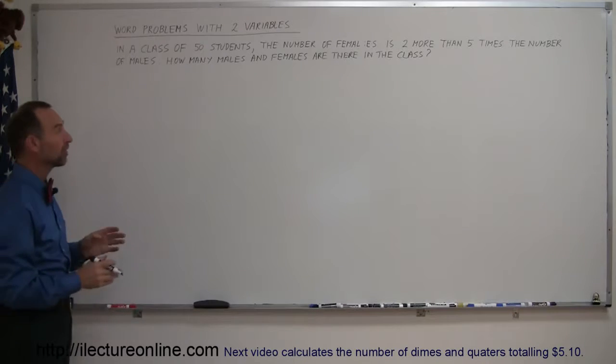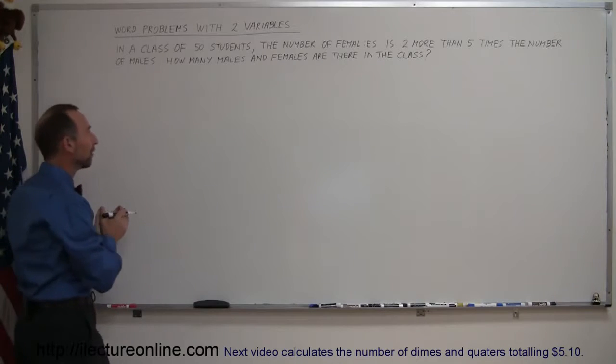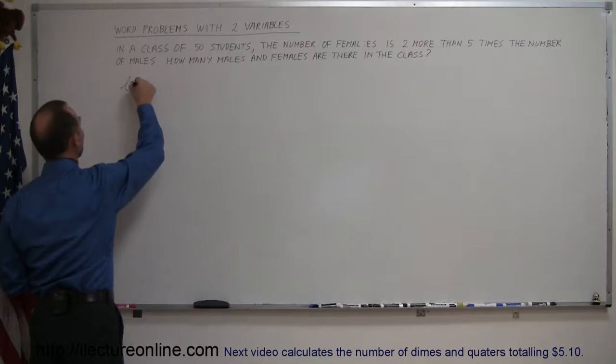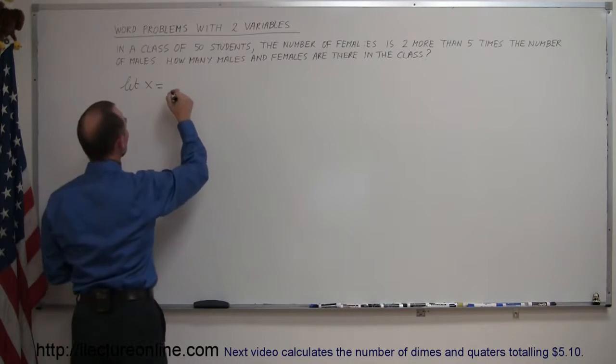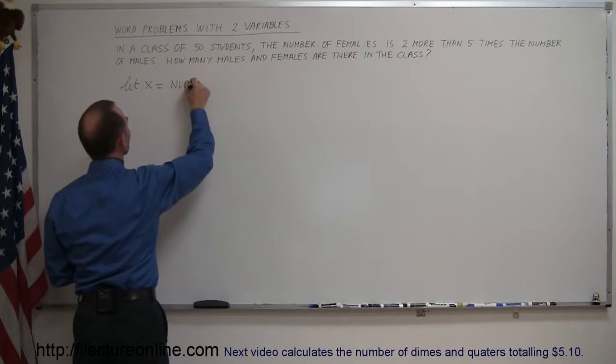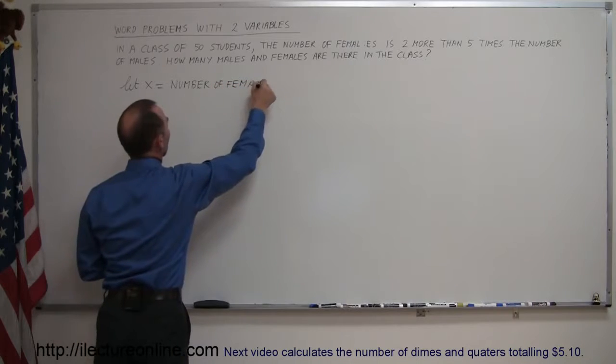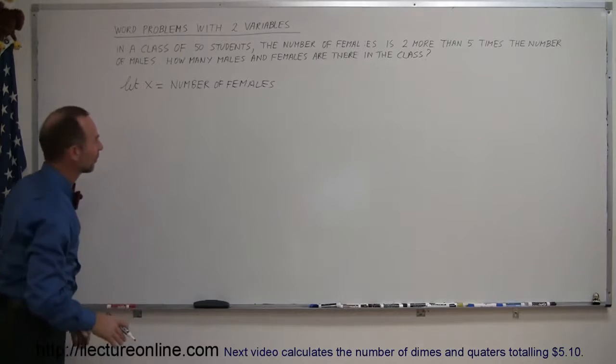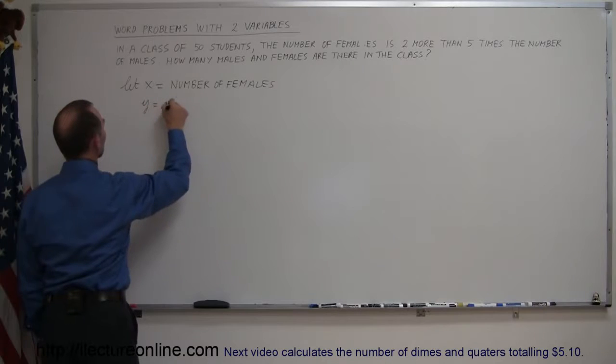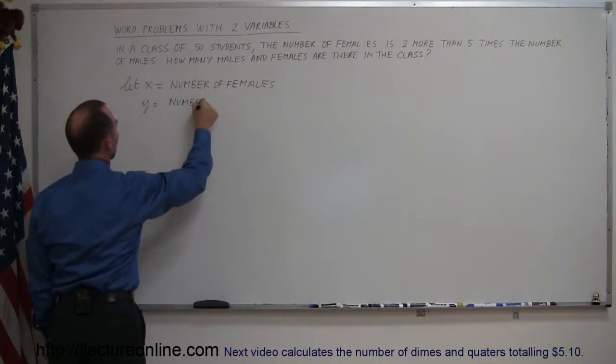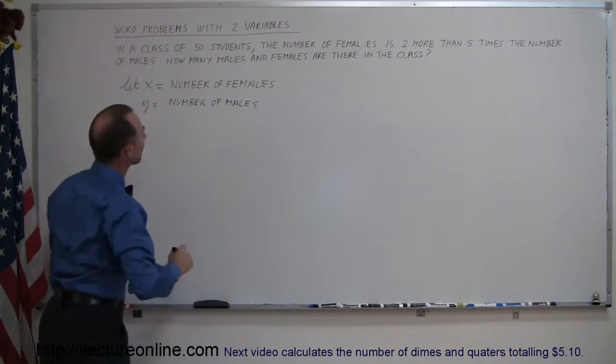Since we're going to use two variables, it's always very important, imperative actually, that you very carefully define the two variables. So you're going to write let x equal and then you'll define what x is equal to. In this case, let x equal the number of females. Sometimes students get a little lazy about doing this, but it's actually a very important step. So always do that. Let y equal the number of males.